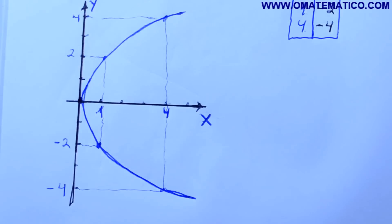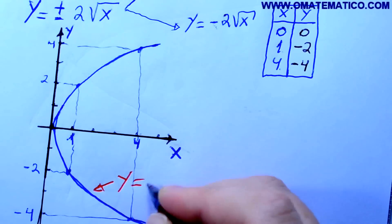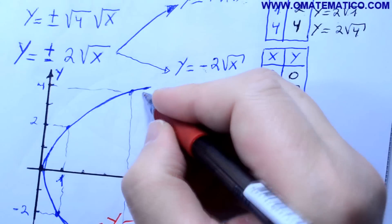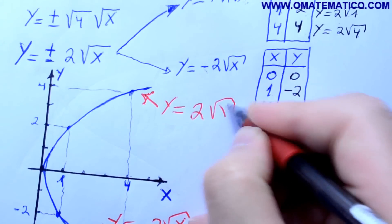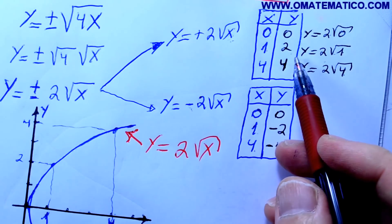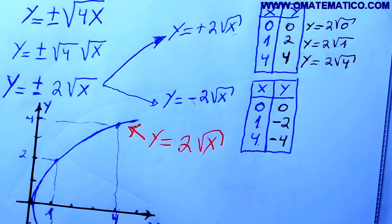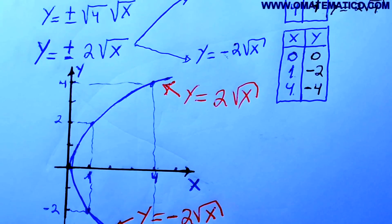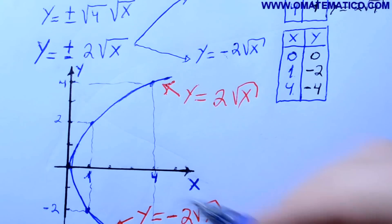Eu fiz este aqui só para vocês verem, pessoal, que este seria o gráfico y igual a menos 2 raiz de x, que é o ramo de baixo. E este aqui é y igual a mais 2 raiz de x. Usando a tabelinha para cada um deles — estou fazendo estes desenhos porque tem muita gente que me cobrou, já que os gráficos prontos não são suficientes e o professor quer que se faça os desenhos.